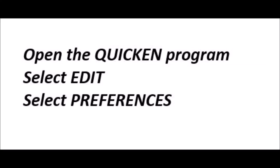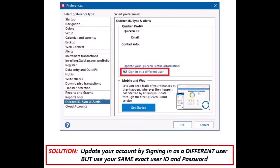Here's how you solve the problem. Open your Quicken program. At the top menu bar, select Edit, then select Preferences. Once you see this screen, all you need to do is sign in as a different user, but use your same exact user ID and password.